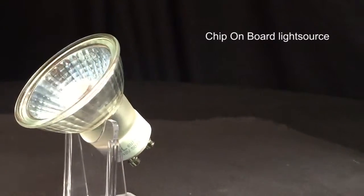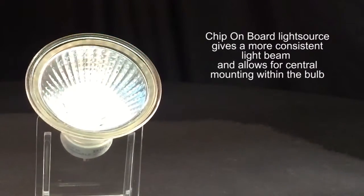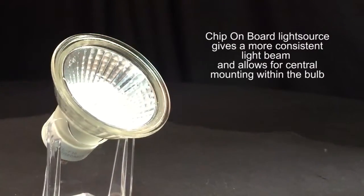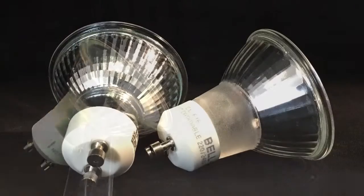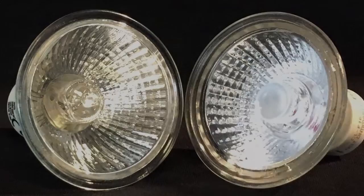With its chip-on-board LED light source giving a more consistent light beam and allowing for central melting within the bulb, it is the most halogen-like LED alternative yet. Take a look at one side by side with a halogen GU10 – can you tell the difference? Let's take a closer look.